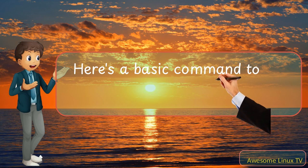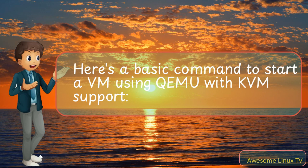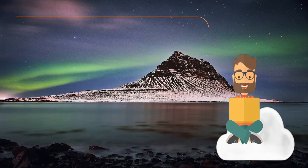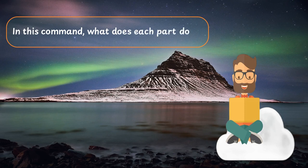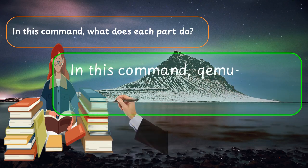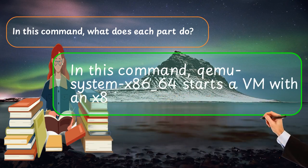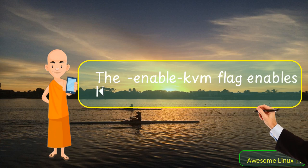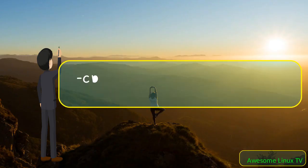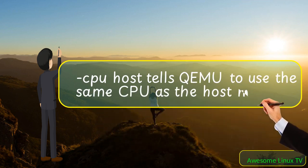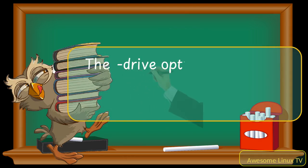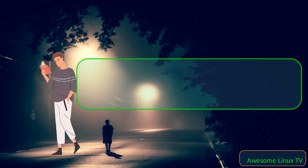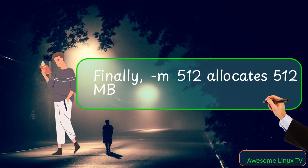Here's a basic command to start a VM using QEMU with KVM support. In this command, QEMU system x86_64 starts a VM with an x86_64 CPU architecture. The enable-KVM flag enables KVM acceleration. CPU host tells QEMU to use the same CPU as the host machine. The drive option specifies the path to the VM disk image and its format — here it's a QCOW2 file. Finally, M512 allocates 512 megabytes of memory to the VM.